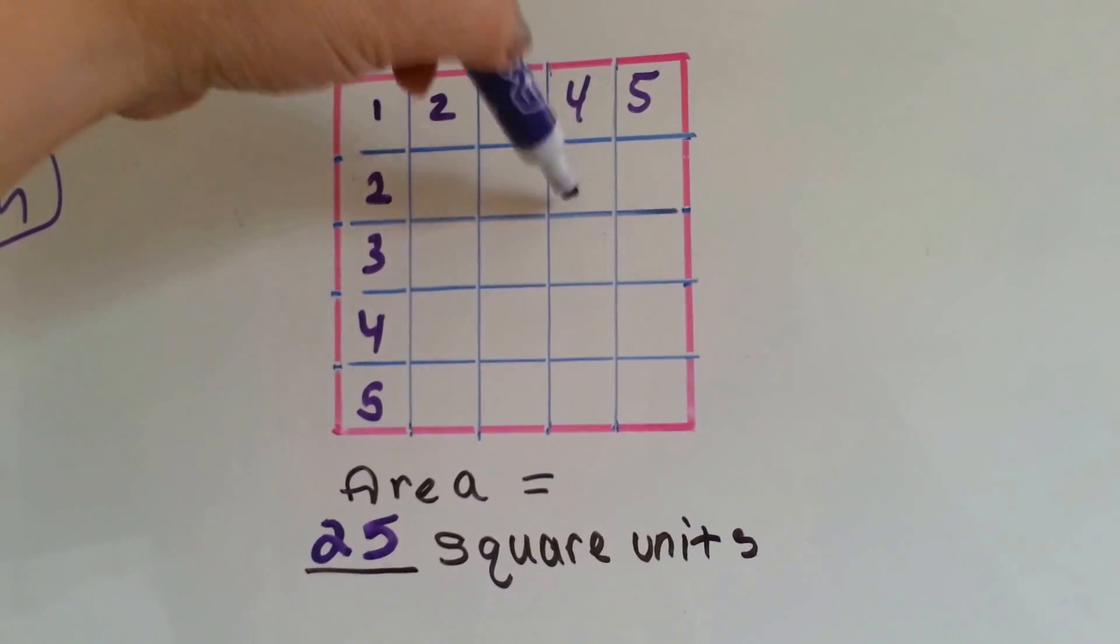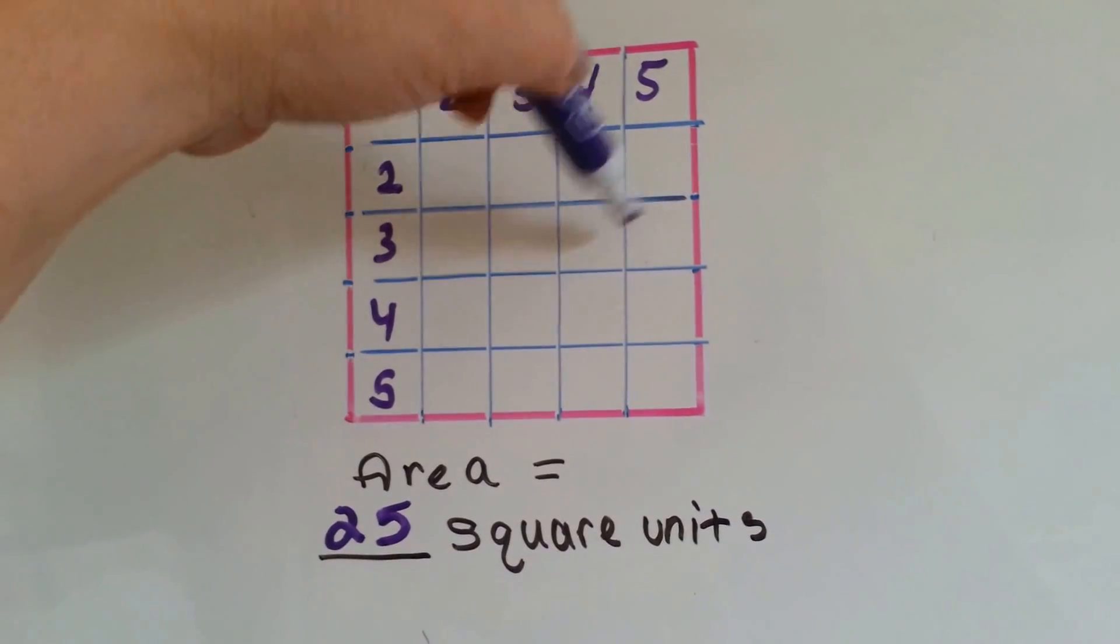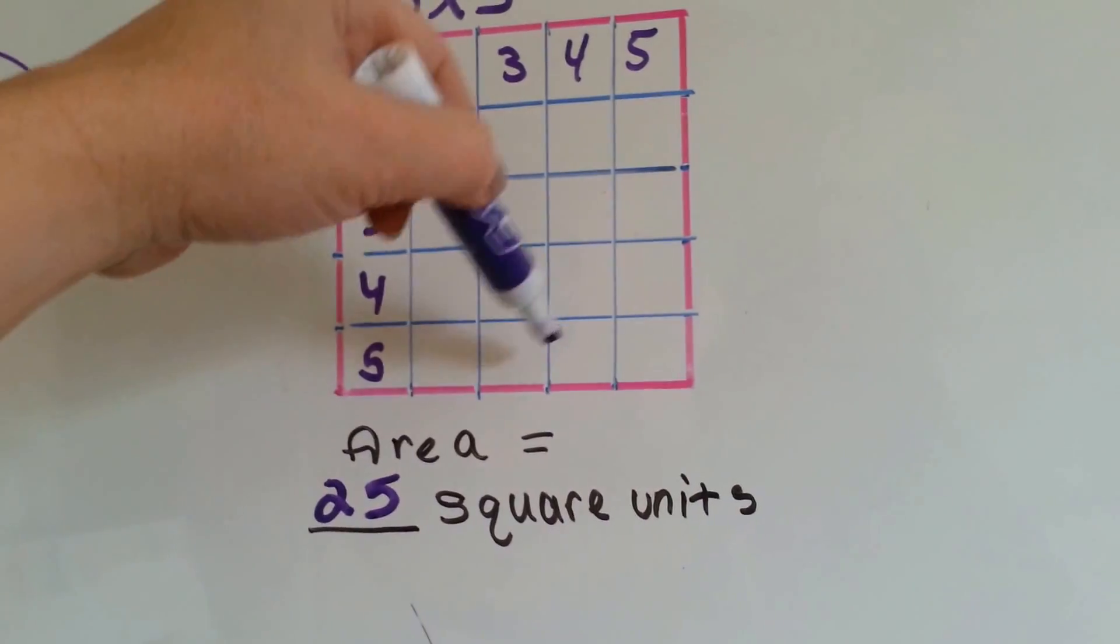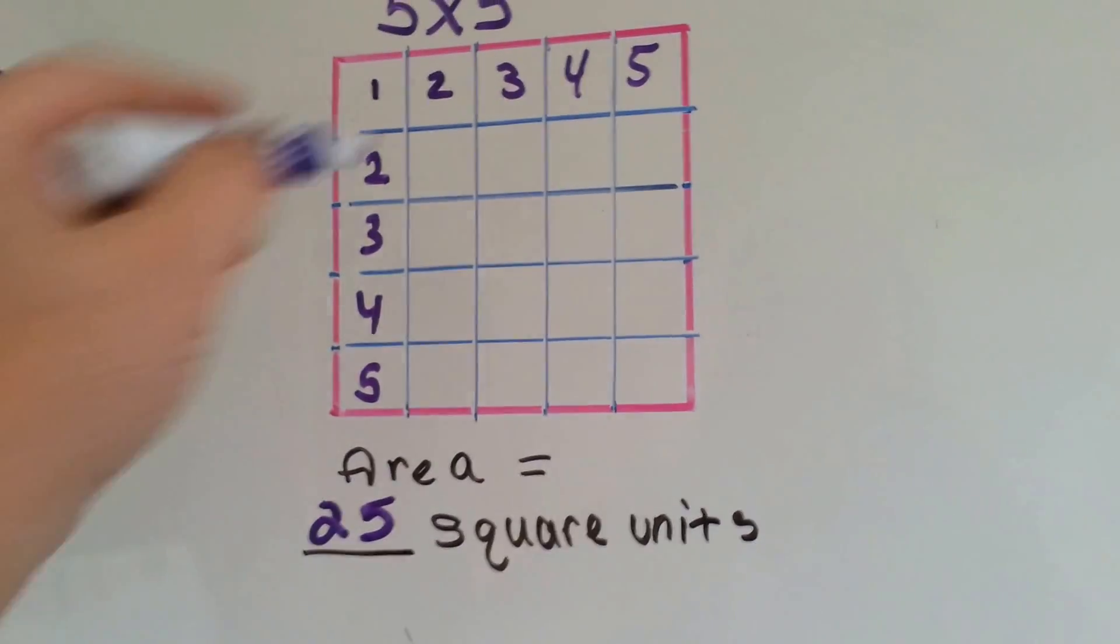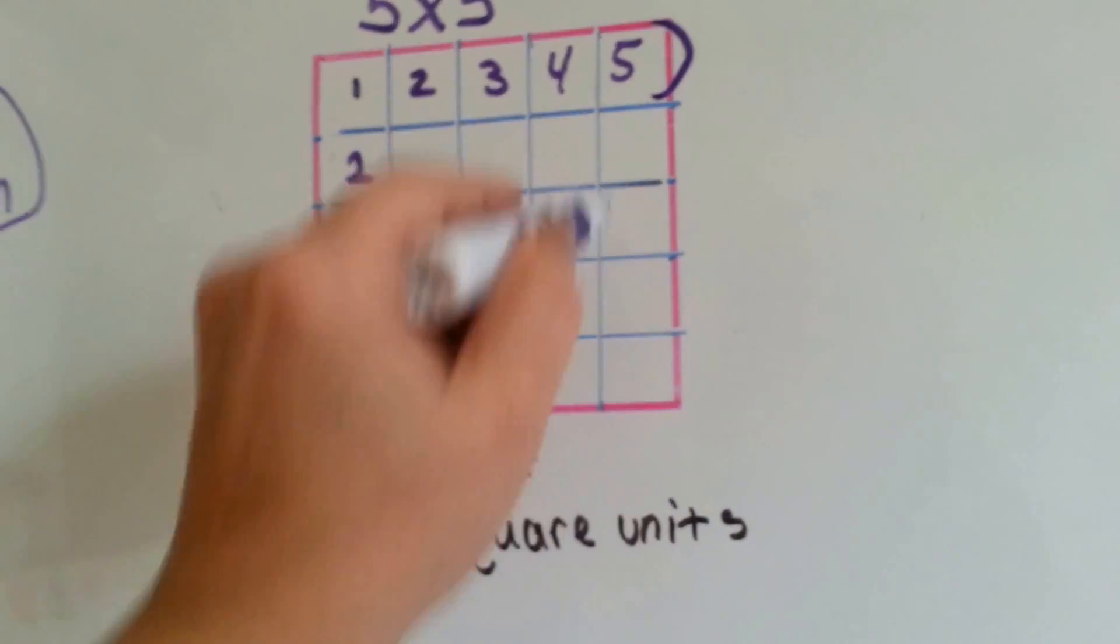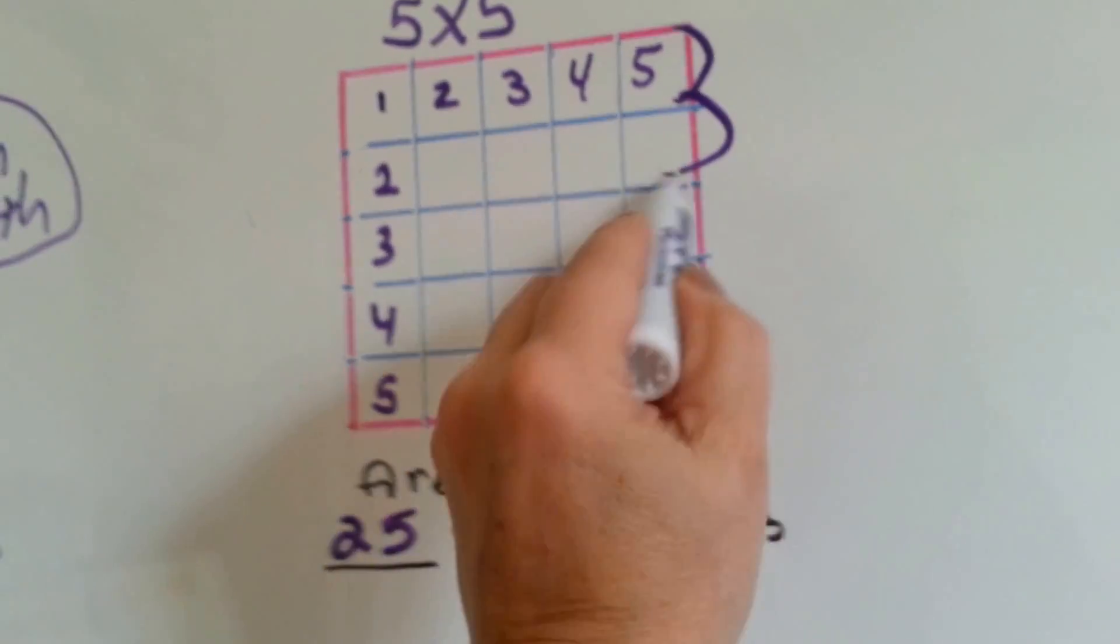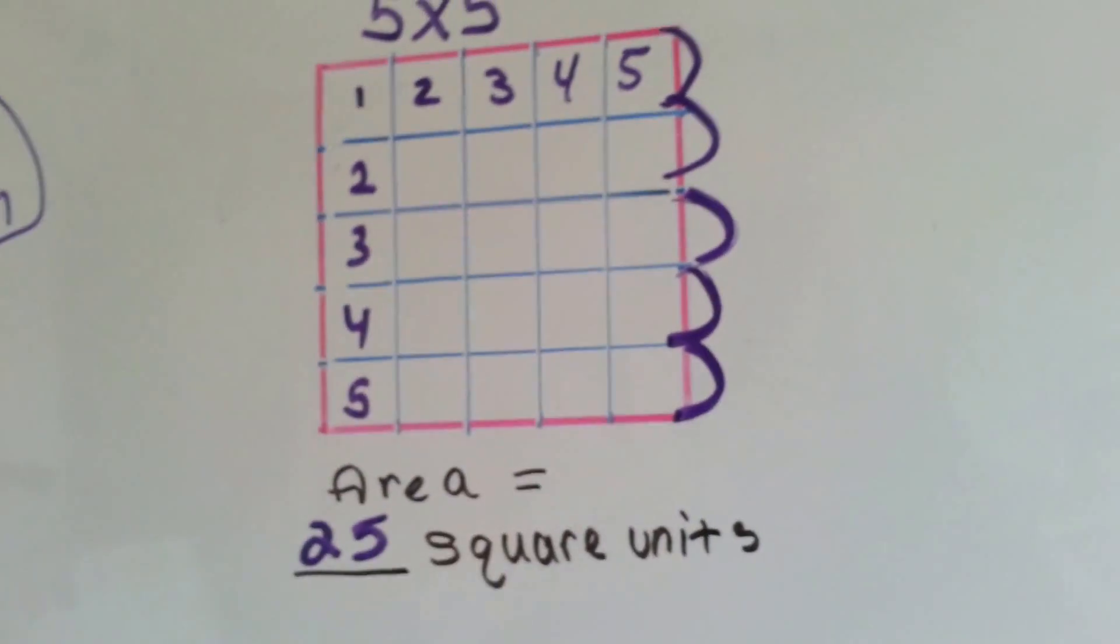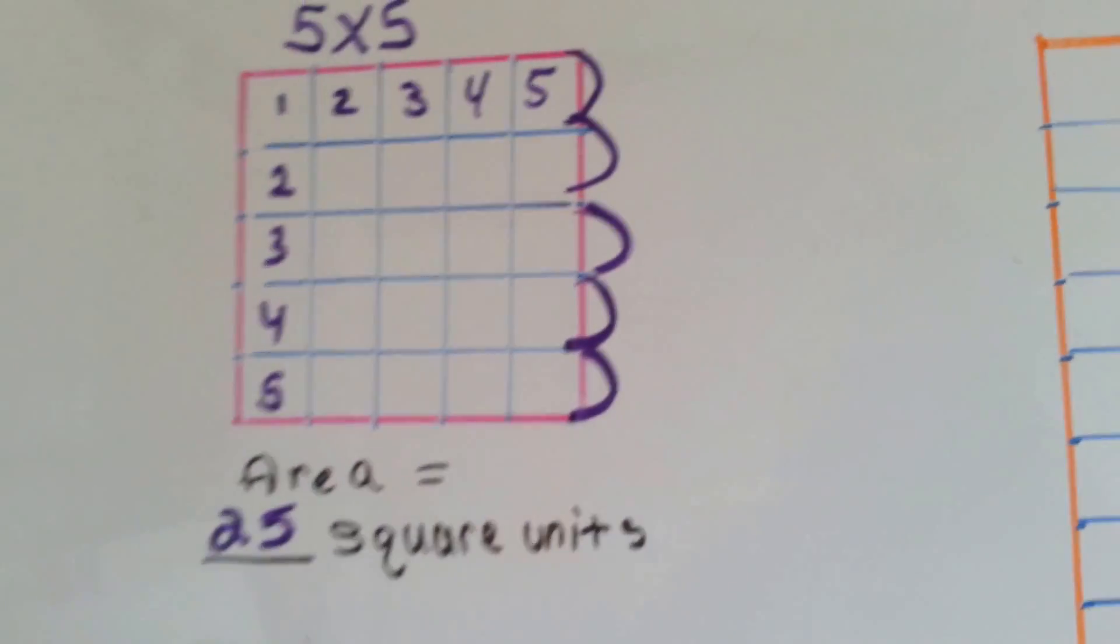That's 5, 6, 7, 8, 9, 10, 11, 12, 13, 14, 15, 16, 17, 18, 19, 20, 21, 22, 23, 24, 25. See? Here's a group of 5. Here's a group of 5. Here's another one, and another one, and another one. So we have 5 groups of 5. That's 25 square units.